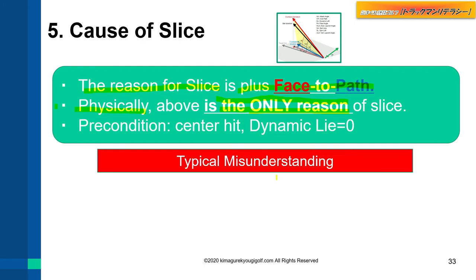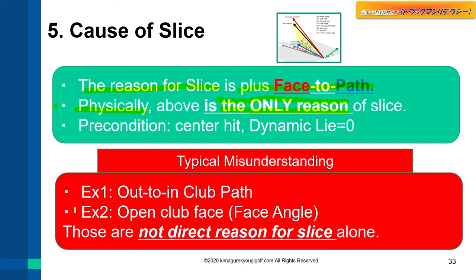Let me introduce a typical misunderstanding. Example 1: when you swing out to in, you get a slice. This is a wrong idea. Example 2: when you hit with an open club face, you get a slice. This is not correct either. Those are not direct reasons for your slice.